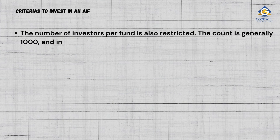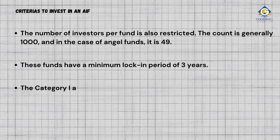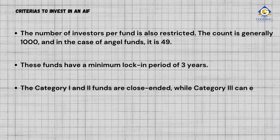The investor count is generally 1,000, and in the case of angel funds, it is 49. These funds have a minimum lock-in period of 3 years. Category 1 and 2 funds are close-ended, while Category 3 can either be close or open-ended.